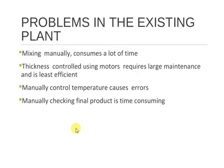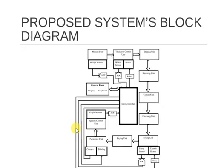Thickness control using a motor requires large maintenance and is least efficient. Manual control of temperature causes errors. Manually checking the final product is time-consuming. These are the four problems. Proposed system block diagram follows.